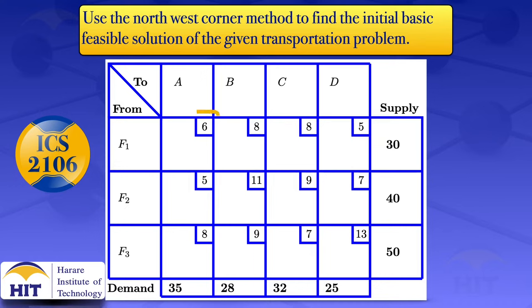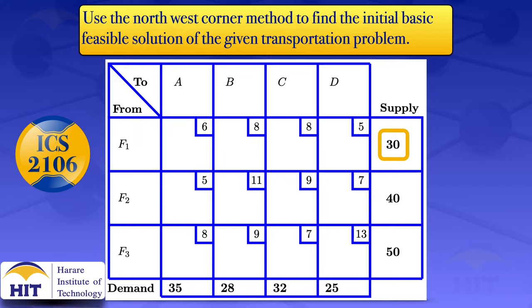What is in those small squares, like the 6 there, is indicating that the cost of transportation from source F1 to destination A for one single unit is 6. And the 30 there is indicating that source F1 has a supply capacity of 30. And at the bottom, the demand is indicating that destination A has a demand of 35.